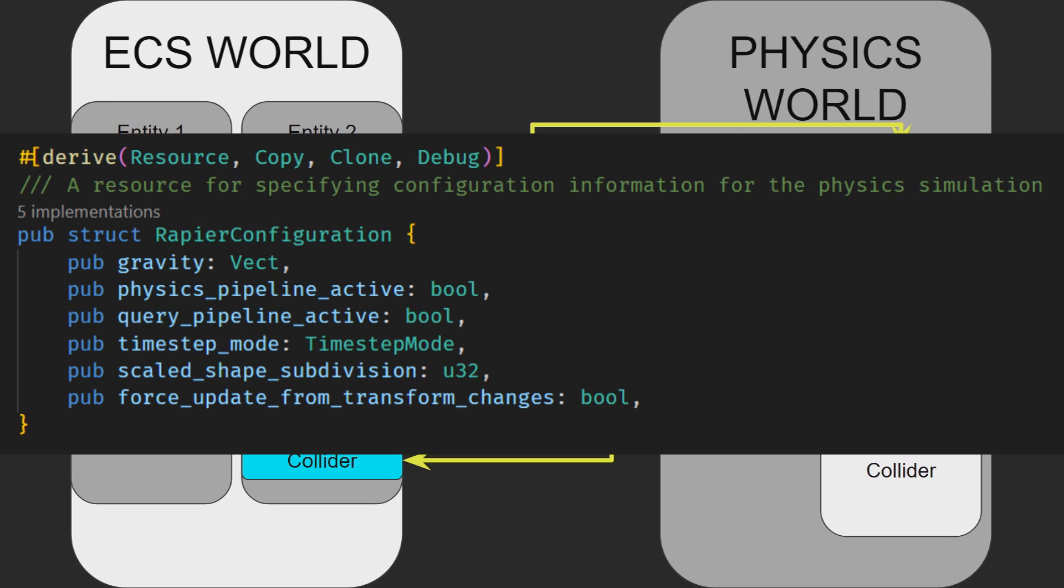There is also the Rapier configuration resource. This allows you to set things that are universal for the physics engine, such as the gravity, whether that's running or not, and what time step is used.